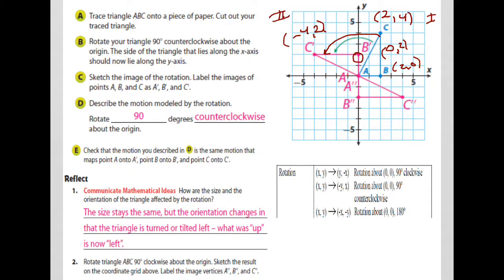Describing the motion modeled by the rotation: we rotated 90 degrees counterclockwise about the origin — that's exactly what the instructions said. The check confirms that the motion maps point A onto A prime, B onto B prime, and C onto C prime. Using the formulas, those points do map correctly.